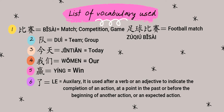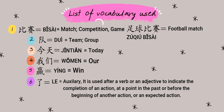今天 (jīntiān) means 'today' — pronounced jīntiān, not 'JIN-TIAN' with a flat ending; the second character tiān takes a first tone becoming jīntiān. 我们 (wǒmen) means 'our' or 'we.' 赢 (yíng), yíng, yíng — yíng means 'to win.'